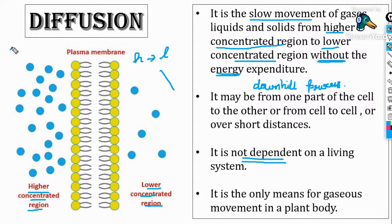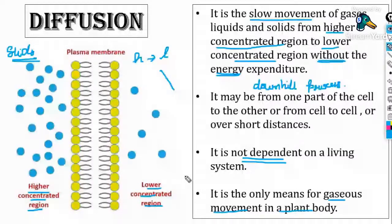At the end of today's session, there will be a five-question Slido Quest on the topic covered today. Diffusion is the only means of gaseous movement in a plant body — whether it is the process of transpiration, evaporation, or a plant losing water from its body — all those processes involve diffusion. The only gaseous movement in a plant body is diffusion.